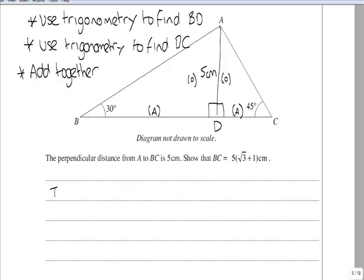So substituting in, tan of 30 is equal to the opposite 5 over the adjacent A. That is our unknown. Rearranging, or cross multiplying however you want to describe it, A in this case is 5 over tan 30.